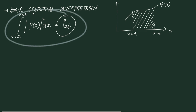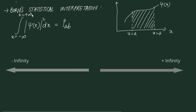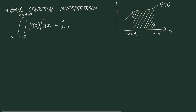The Born interpretation states that |psi(x)|² dx between two locations a and b gives you the probability of finding the particle there. Extending this to the entire universe: if the particle's motion is restricted to one dimension, the particle has to be somewhere between minus infinity and plus infinity. By definition, if the particle exists, the probability of finding it between minus infinity and plus infinity must equal exactly one — not zero, not less than one, not greater than one.